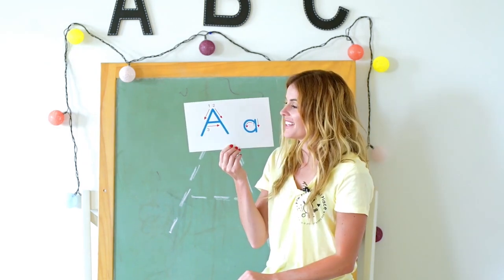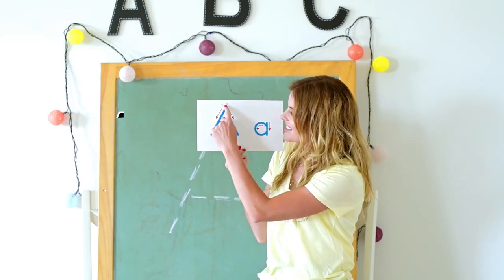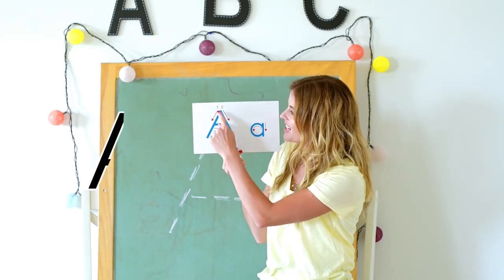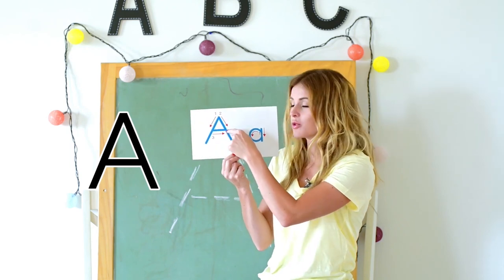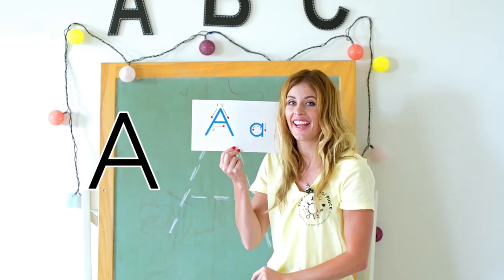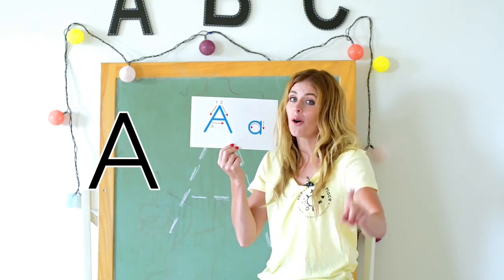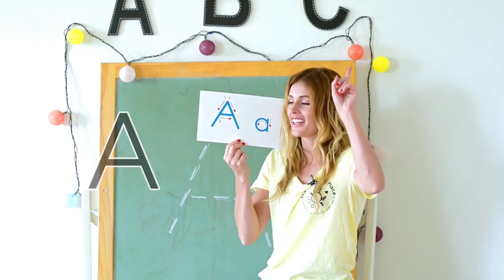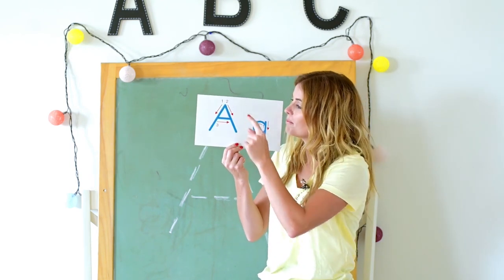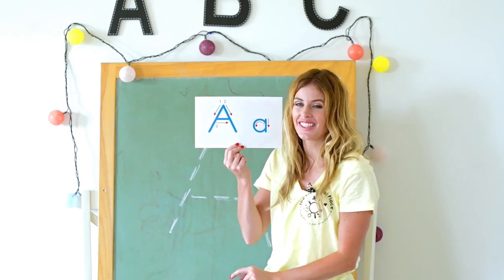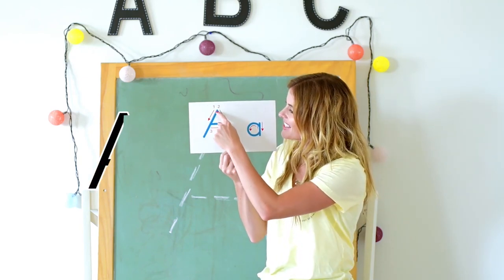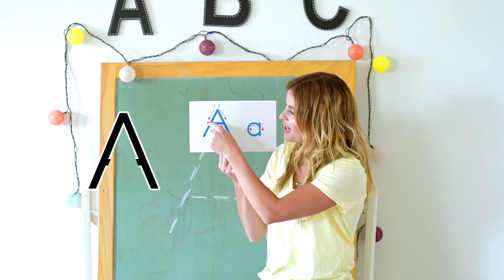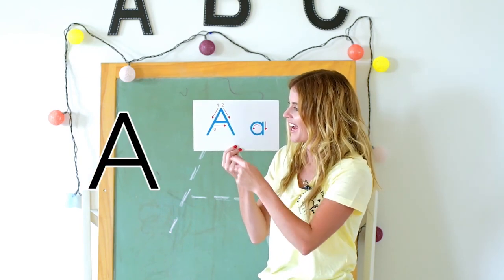Big A goes like this: slant down, slant down, across A. We always start our letters at the top. Let's do it again: slant down, slant down, across A.